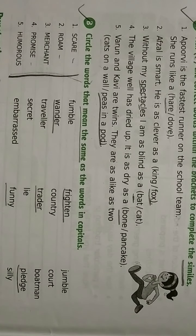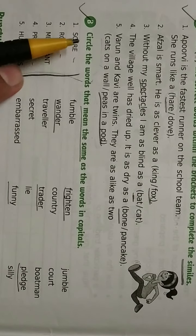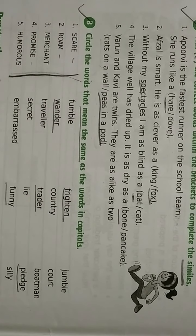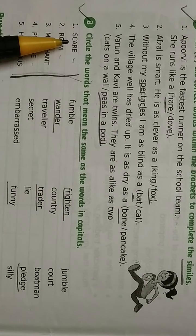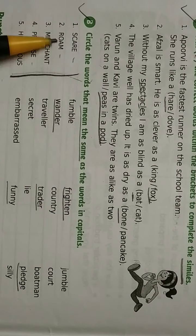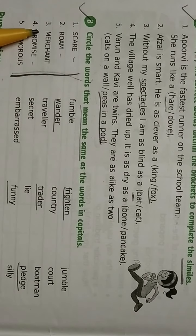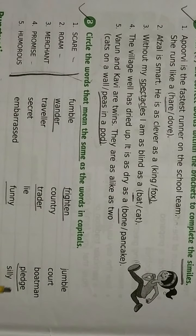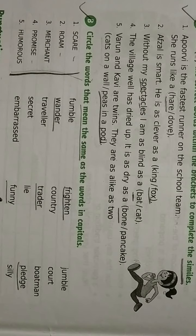Your B question of lesson number 3 is: Circle the words that mean the same as the words in capitals. Scare means frightened. Roam means wander. Merchant means trader. Promise means pledge. Humorous means funny.